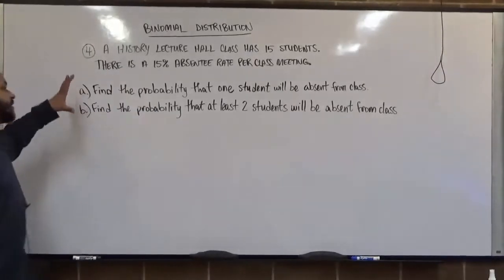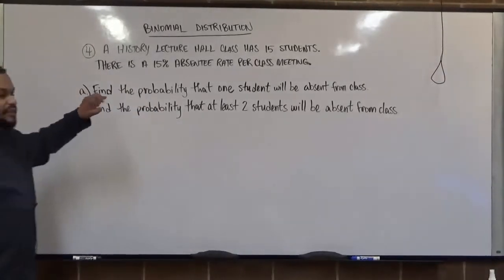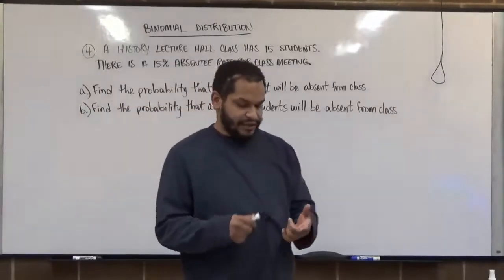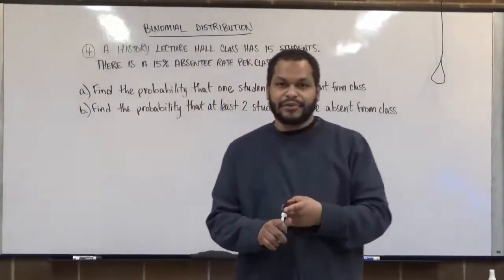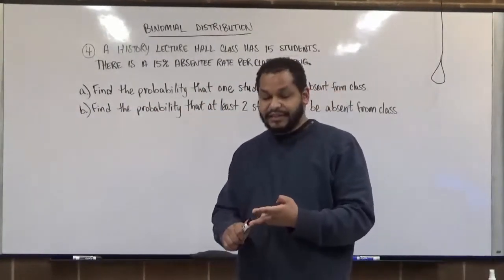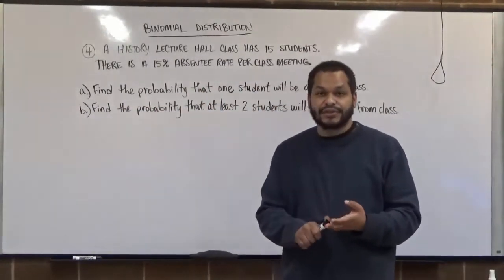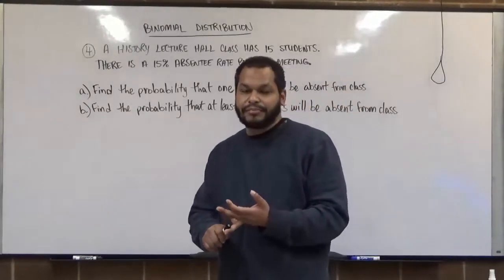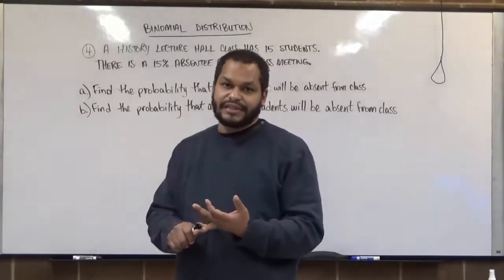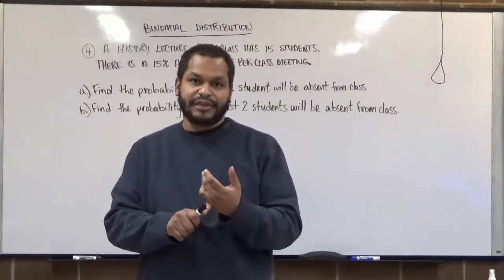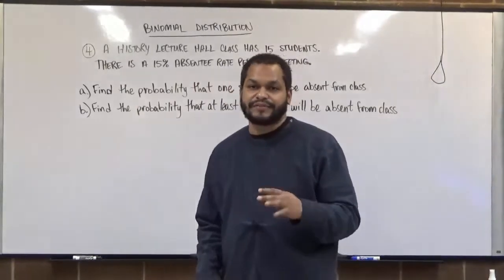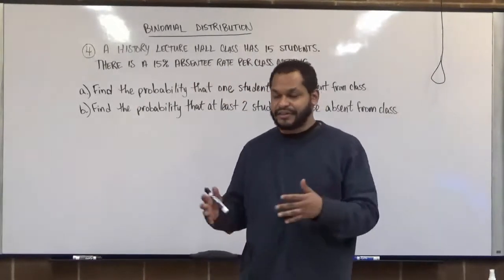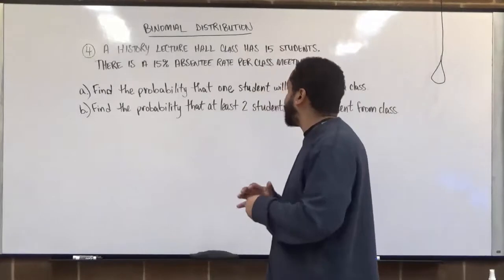Because this is a binomial distribution, there are a couple of things we need to identify first. N is the number of trials, X is the number of successful trials, P is the probability of success, and Q is the probability of failure. These are the four components and requirements necessary to conduct a binomial experiment.